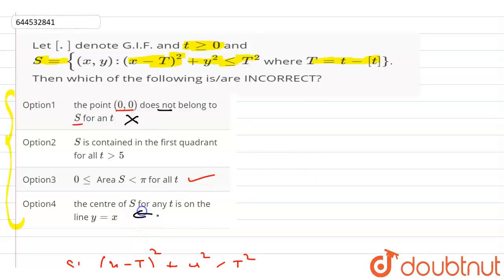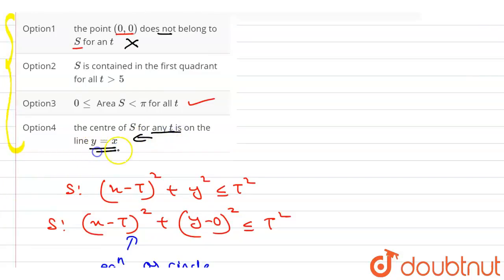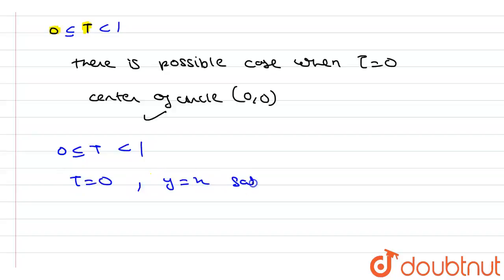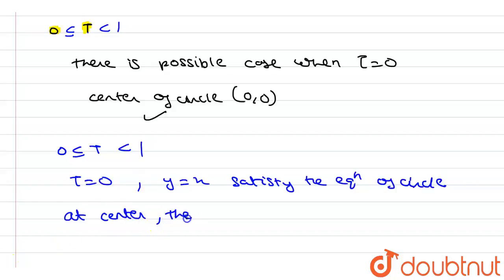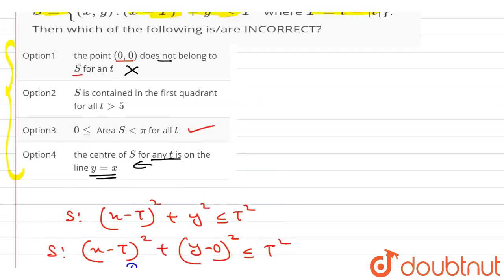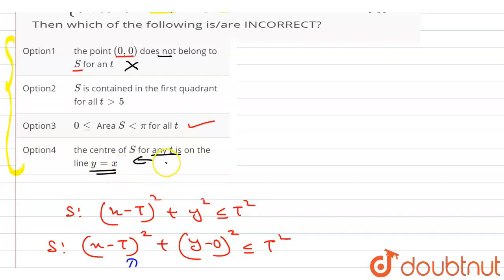Now we check option number 4, which says the center of S at any point t is on the line y equals x. For t in [0, 1), when t equals 0 the center (0,0) satisfies y equals x. However, for t greater than 0 the center is at (t, 0), which lies on y equals 0, not y equals x. So we cannot say the center is always on y equals x, and this option is also false.